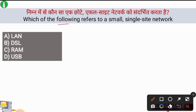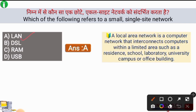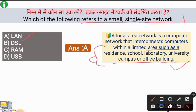Next question: Which of the following refers to a small single-site network? The right answer is option A, LAN. LAN stands for Local Area Network and it refers to a small single-site network. A local area network is a computer network that interconnects computers within a limited area such as a residence, school, laboratory, university campus, or office building.